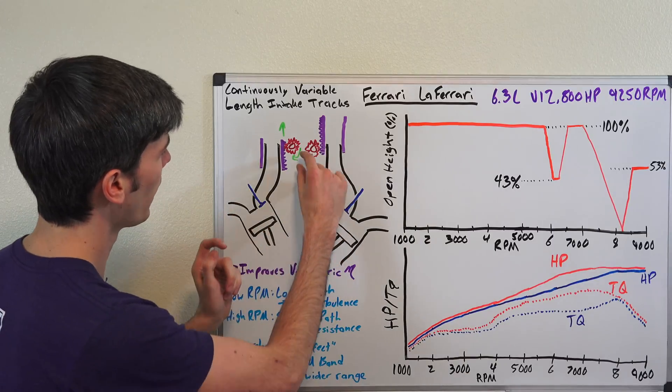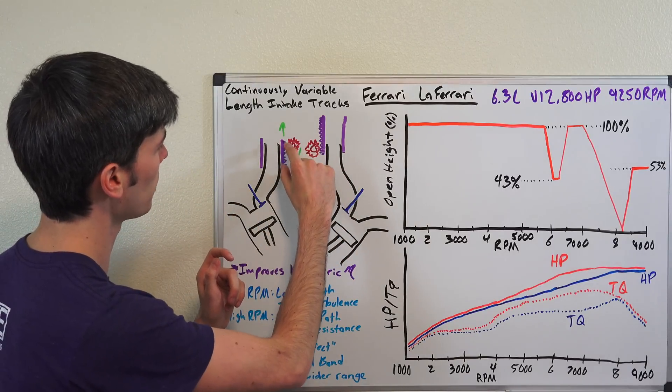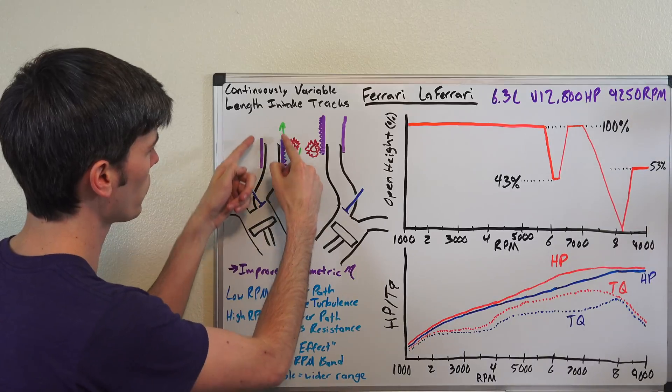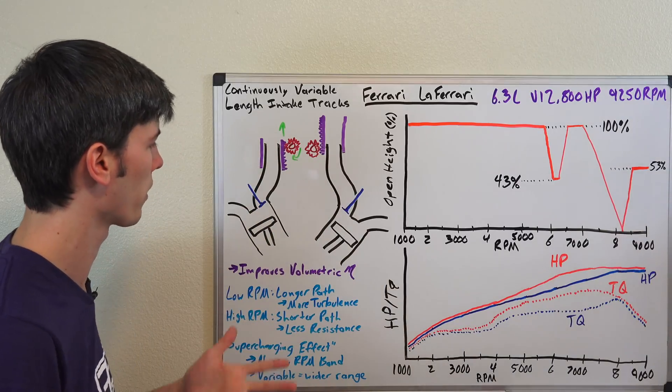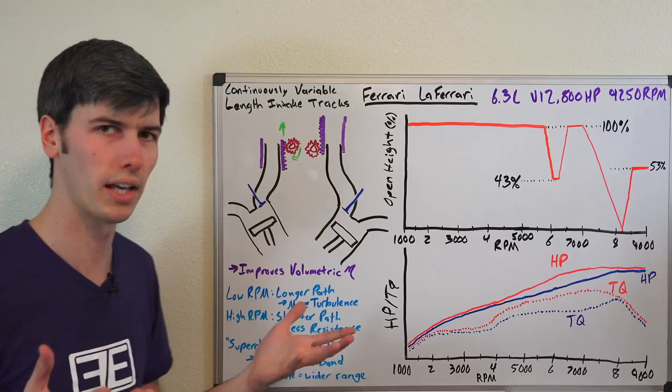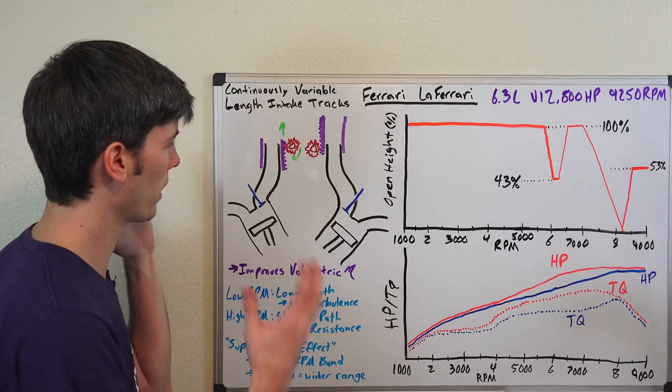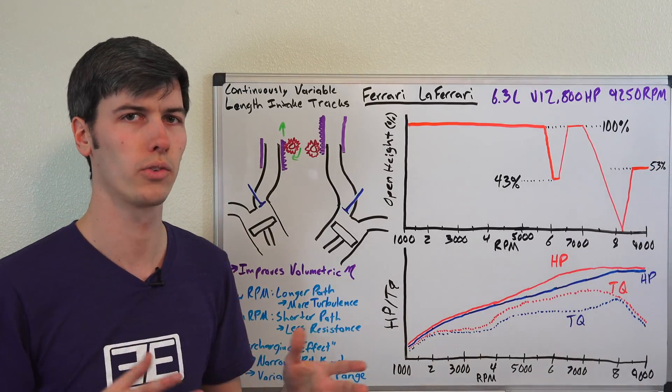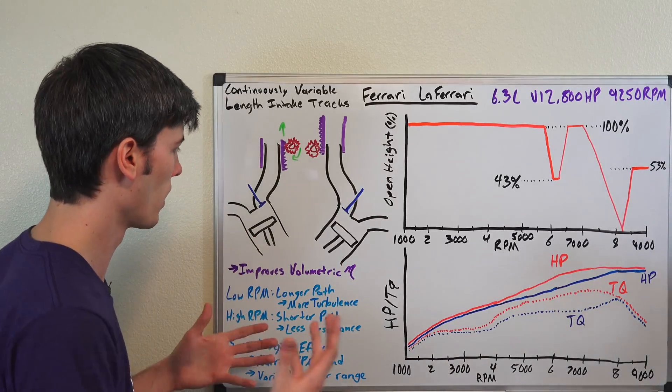So you've got the V right there and then you've just got this simple rack and pinion system which you can change the length of that intake runner with. Now there's a couple theories that go into this about why you might want to change the length of that intake runner, but the biggest reason why they do this is to improve volumetric efficiency of the engine.